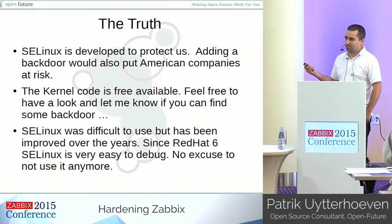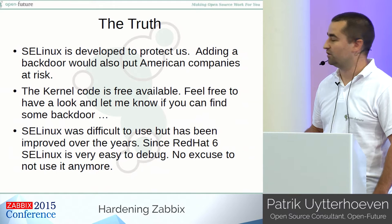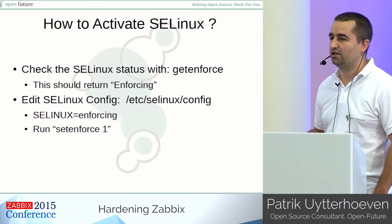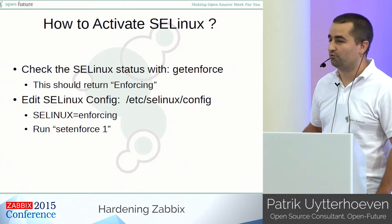SELinux was difficult to use — that's true. In the beginning it was very hard to set up and configure, but it has been improved over the years a lot. Certainly since Red Hat 6, SELinux is very easy to debug, so it's not really an excuse anymore to not use it in a production environment. To activate SELinux, if you use Red Hat it should be activated already by the installation. But just in case, you can use the command `getenforce` to see if it is in permissive mode, enforcing mode, or disabled. Normally it should return 'enforcing'.